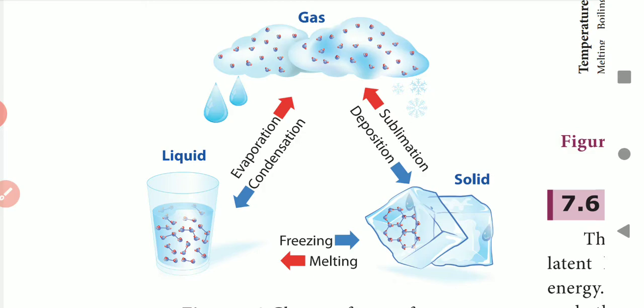Gas can convert directly into solid in the form of snow, which we call deposition. After temperature increases, the snow will melt and convert to water again.